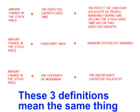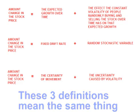Brownian motion assumes that there are two parts to random movement. The first is an overall constant driving force called the drift. The second is a random component. Therefore, the rate that the asset changes in value each day — the r value that the e is raised to — can be broken down into two parts: an overall drift and a random stochastic component.